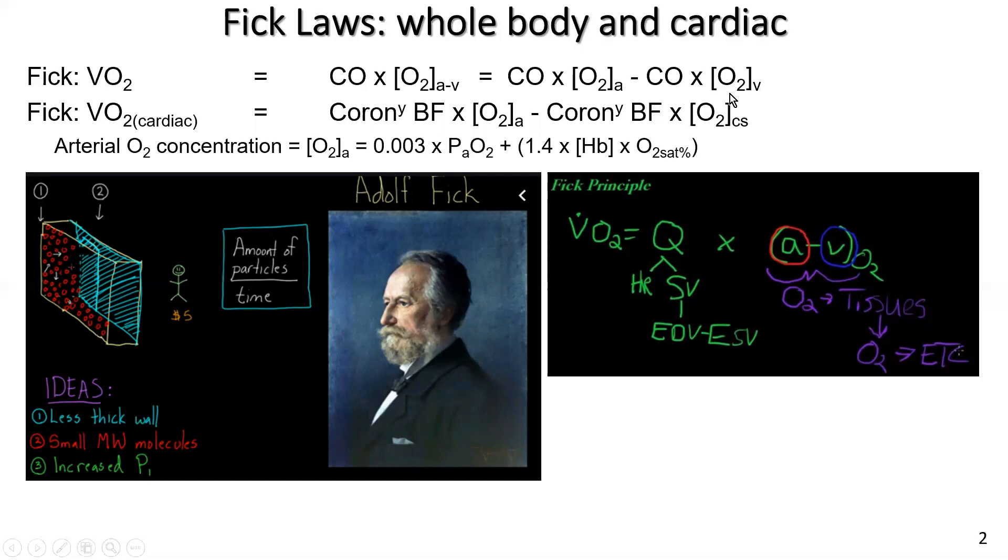And thereby, if you sample from the right atrium, that may not be representative of true mixed venous oxygen concentration. By the time it gets into the right ventricle, that blood is thoroughly mixed. And of course, it doesn't change going across the pulmonary valve into the pulmonary arteries.